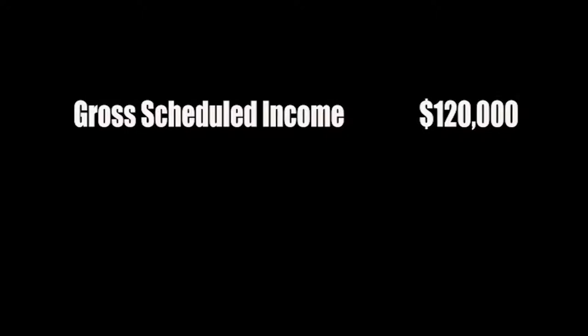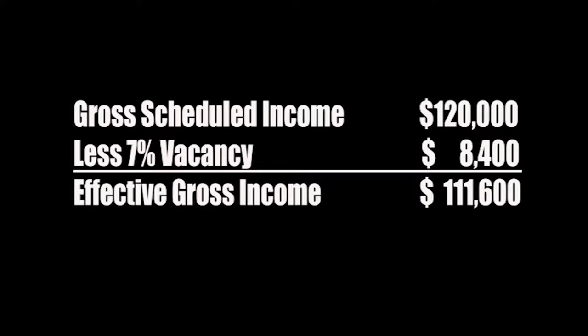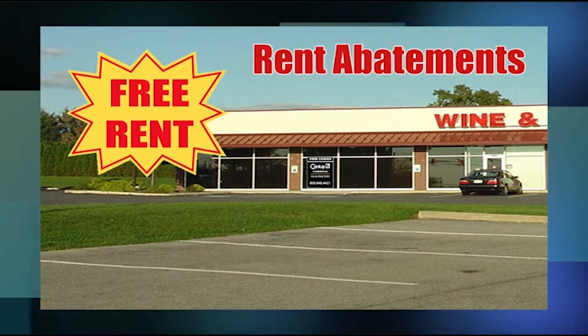Whatever vacancy rate you determine, take that percentage off your gross scheduled income to find a more accurate picture of what a buyer is likely to actually receive in rents. One caveat: if the typical vacancy rate in the area is 7% but your building has been half empty for five years, use the actual income as your effective gross income. Going back to our office building example with a gross scheduled income of $120,000 and a 7% vacancy rate, we reduce income by $8,400, giving us an effective gross income of $111,600. For office or retail space, you may also need to reduce for rent abatements — periods of free rent used to attract long-term tenants.